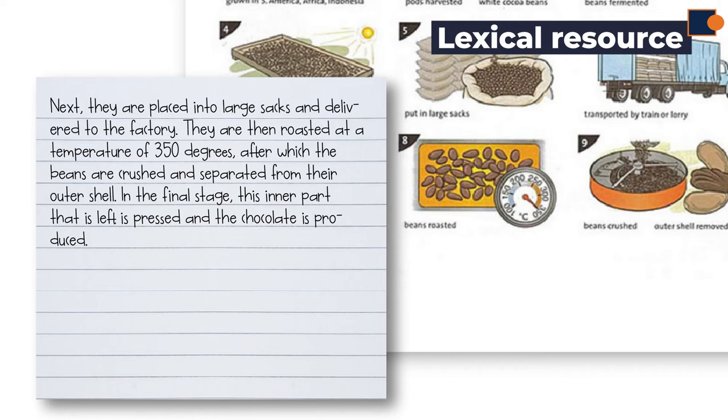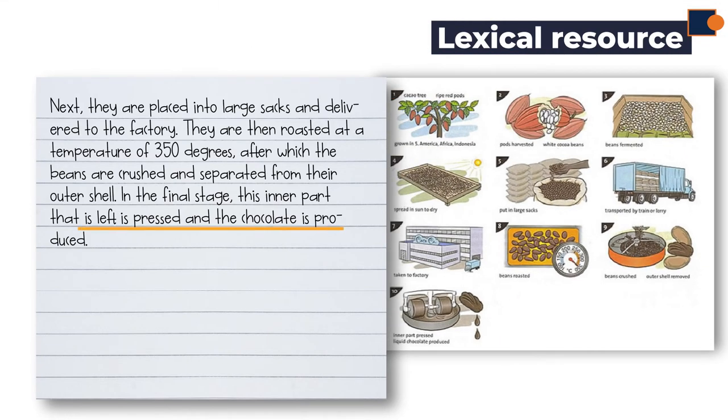The final two pictures are summarized by saying beans are crushed and separated, the inner part is pressed, and chocolate is produced.